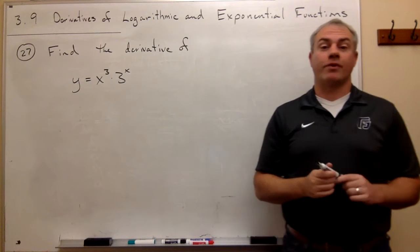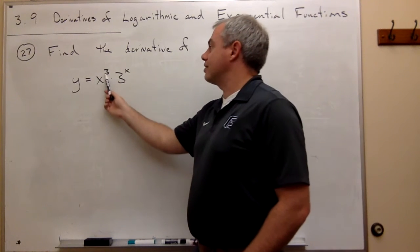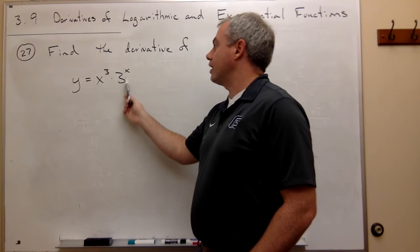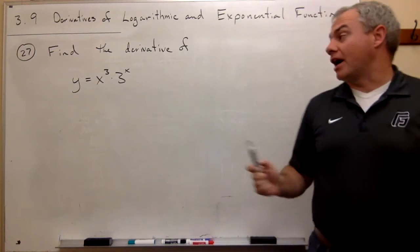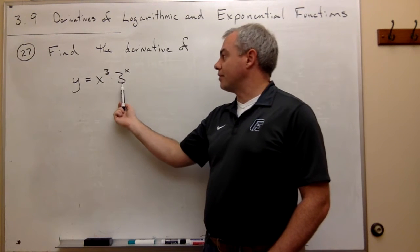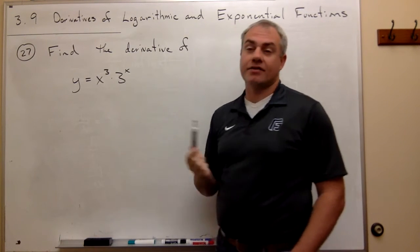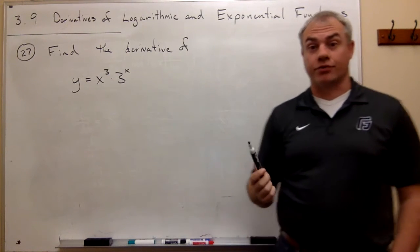In problem number 27, we want to find the derivative of y equals x cubed times 3 to the x. In this problem, I have a function, x cubed, times another function, 3 to the x, that are multiplied together. So I do need to use the product rule here.